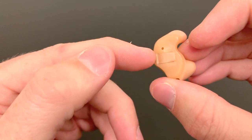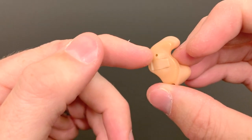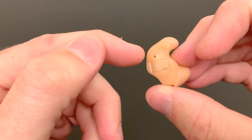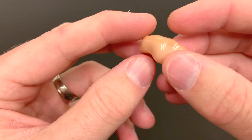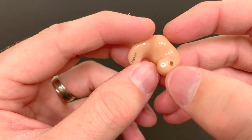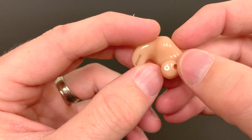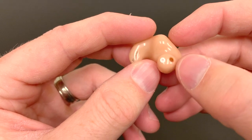So on this style of hearing aid, again, your parts are the battery door is here, microphones are usually here on the front face. This is called the face plate here on the front face of it. And then we have the receiver with the wax guard here, and you also may have the vent tube here.